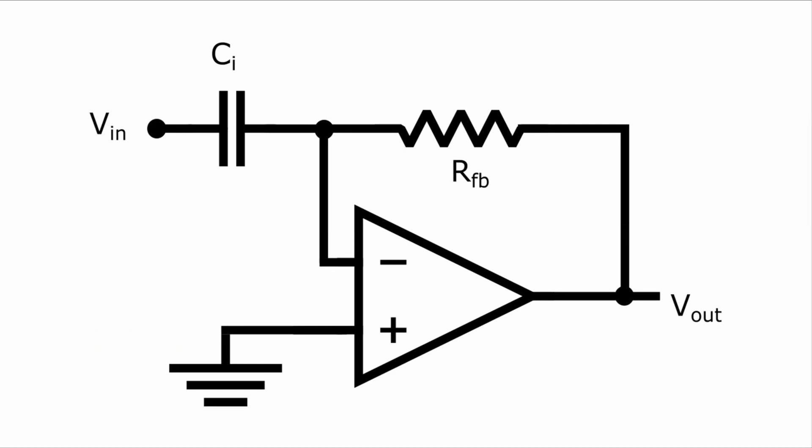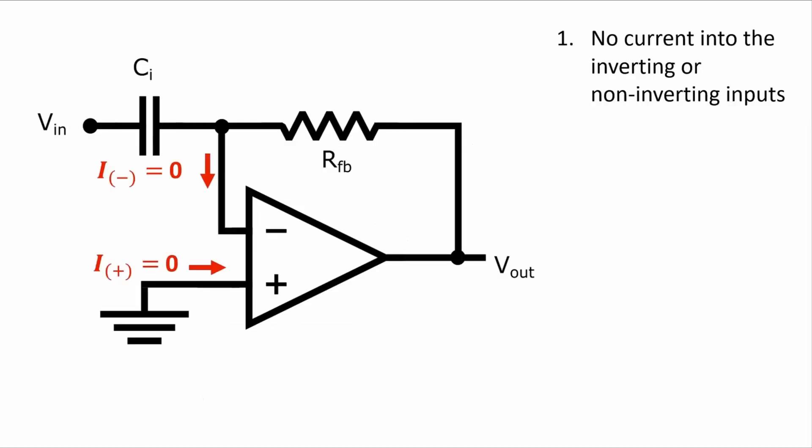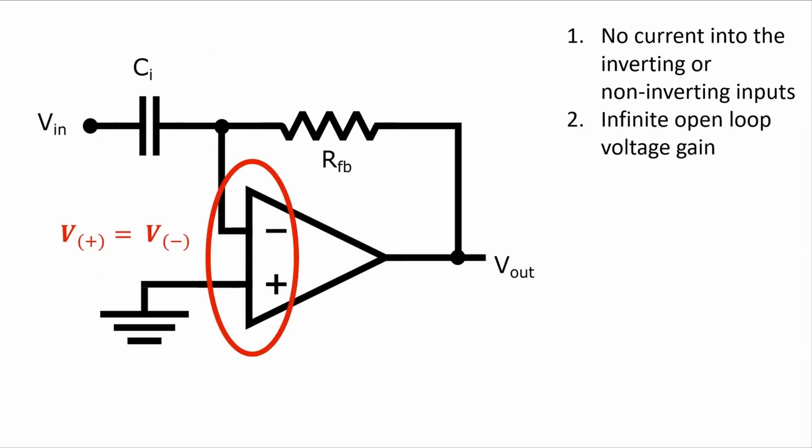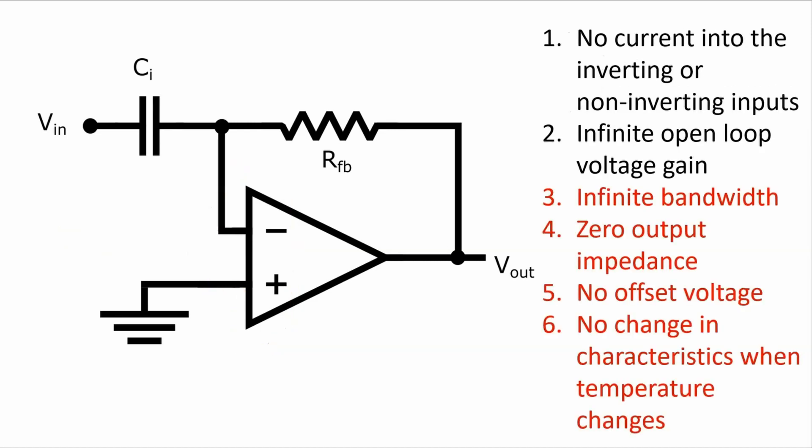For this analysis, we're going to assume that this op amp is ideal, which means no current goes into the inverting or non-inverting pins because the input impedance is infinite. The open loop voltage gain is infinite. So with the negative feedback of this circuit, the voltage at the inverting terminal and the voltage at the non-inverting terminal are the same. We can also assume these other characteristics, but they don't have as much of an effect on the analysis.